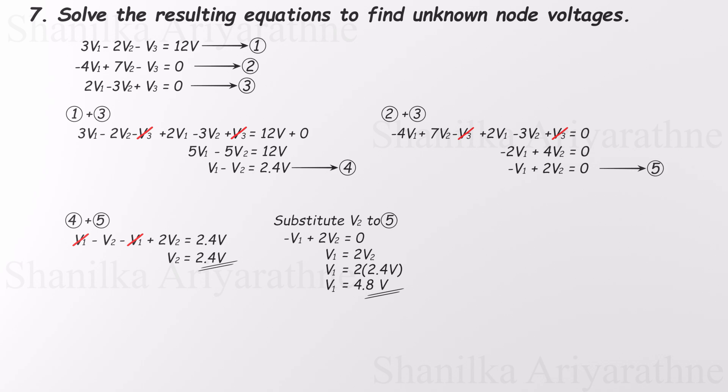Finally, using the values for V1 and V2, we substitute back into one of our original equations to solve for V3. The result? V3 equals negative 2.4 volts.